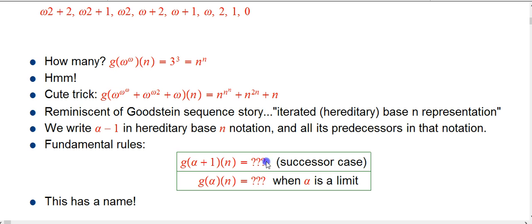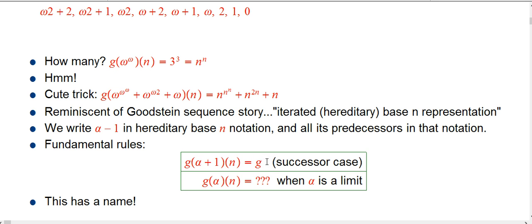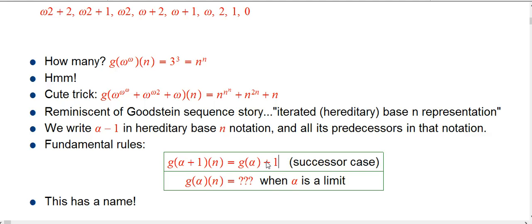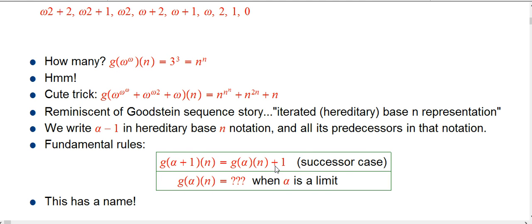Very simple: the rule is g of (alpha plus 1) of n is just g of alpha of n plus 1. Successors behave in the simplest way — g of a successor is just the ordinary successor, as in just add 1 to this finite number.